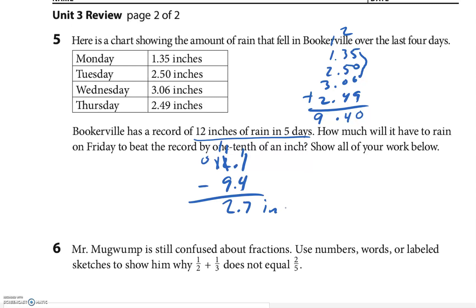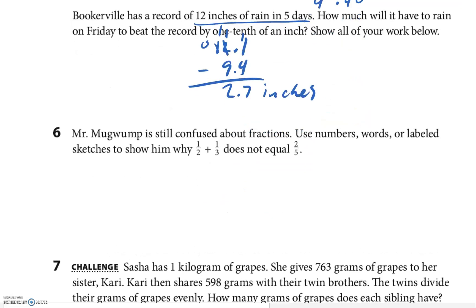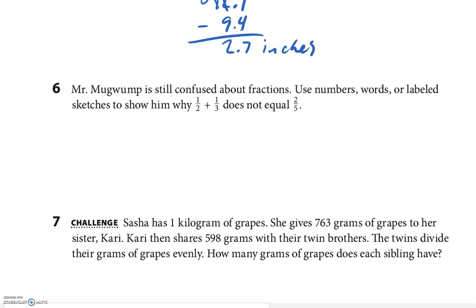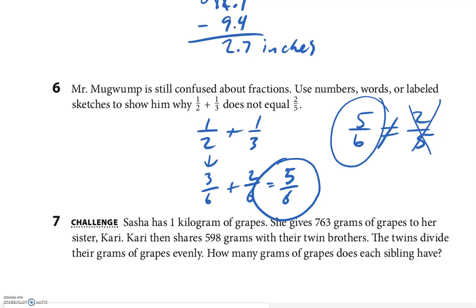Let's talk about Mr. Mugwump, still confused about fractions. One-half plus one-third does not equal two-fifths. Well I might just do this, and you could draw a picture if you want. I'm going to turn them into equivalent fractions. 2 and 6 meet up, and 2 and 3 meet up at 6, right? So one-half of 6 is 3/6, one-third is equal to 2/6, and so that I believe is 5/6 is my answer. That does not equal two-fifths. 5/6 is way greater than 2/5, so that one doesn't work, it's 5/6.